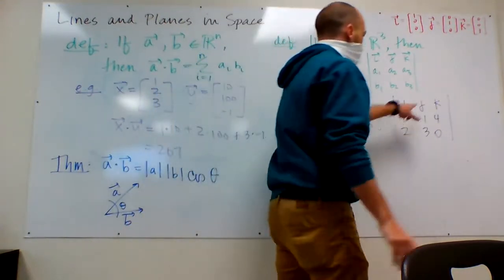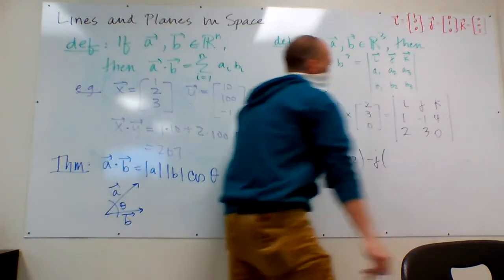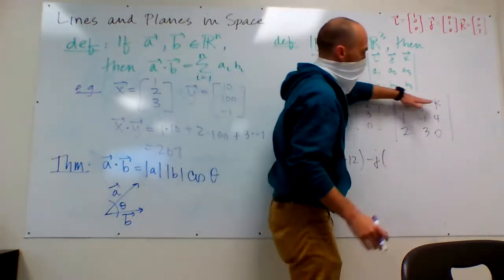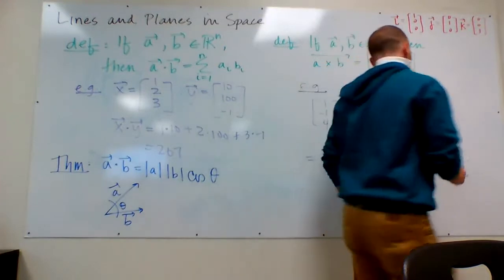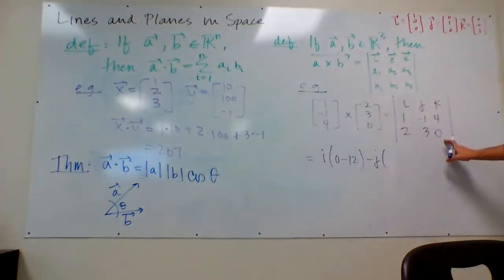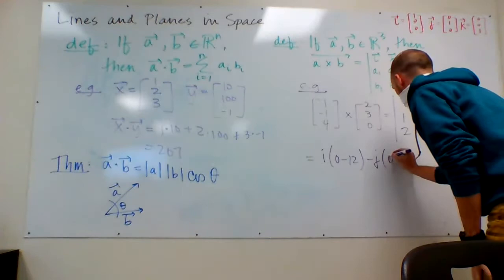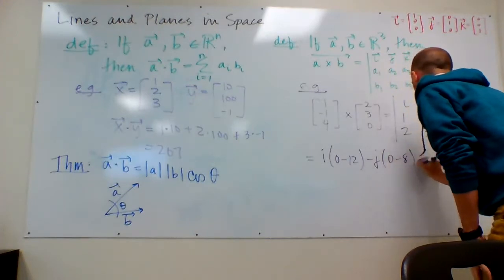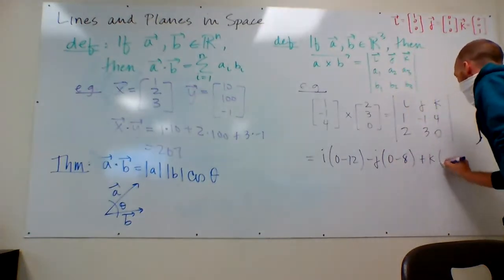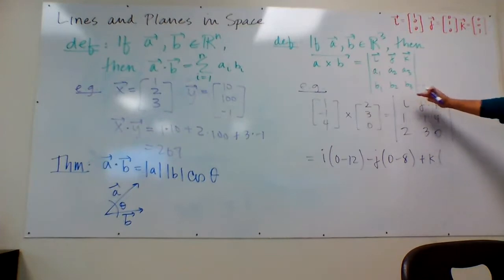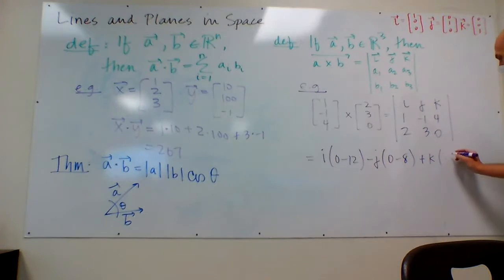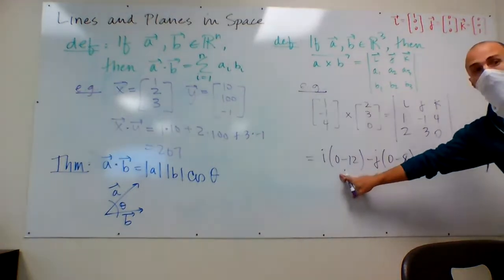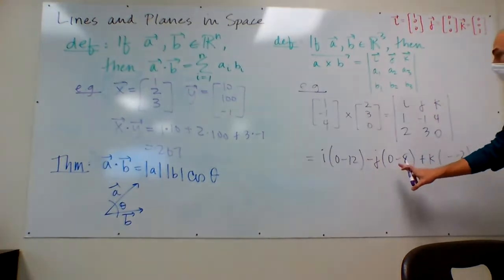And so it's minus J times, okay, we're going to cover up the row and the column and do that same fish. It's going to be 1 times 0, minus 4 times 2. So 0 minus 8. And then we're going to add in K times, we're going to cover up the column and cover up the row, 3 minus negative 2.